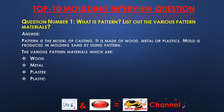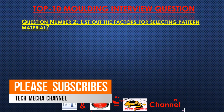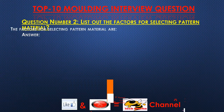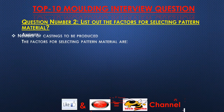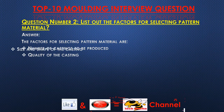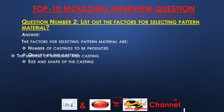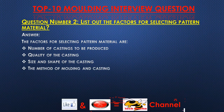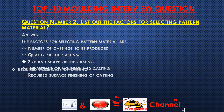The various pattern materials are wood and metal. Question number two: List out the factors for selecting pattern material. Answer: The factors for selecting pattern material are the number of castings to be produced, quality of the casting, size and shape of the casting, and the method of molding and casting.